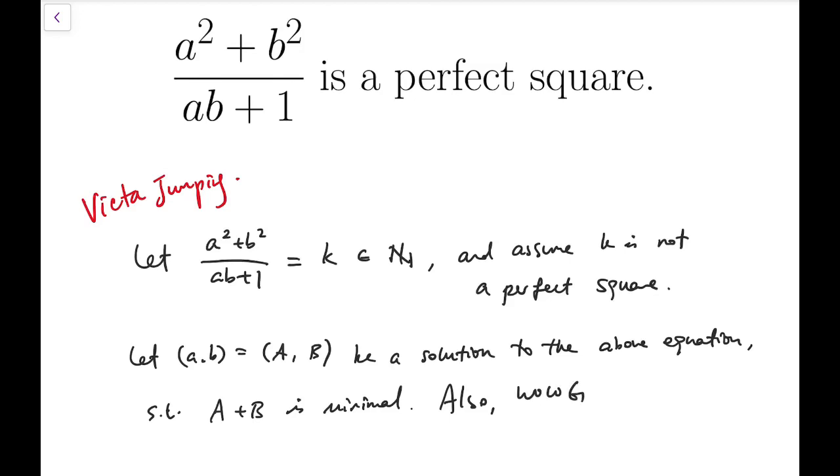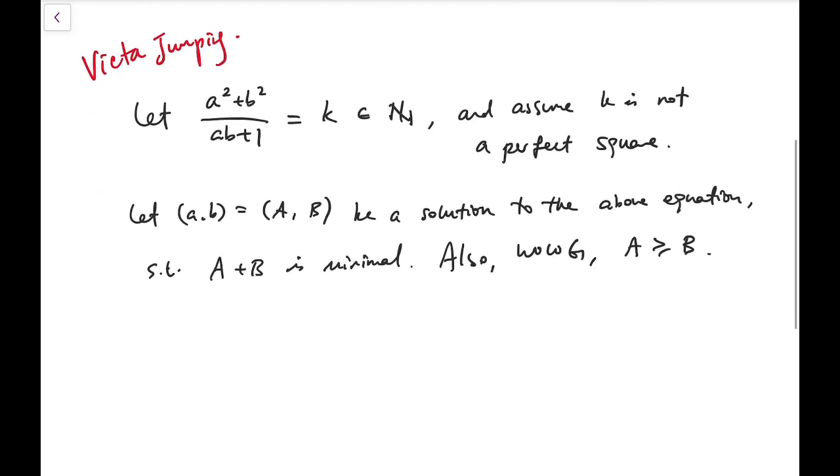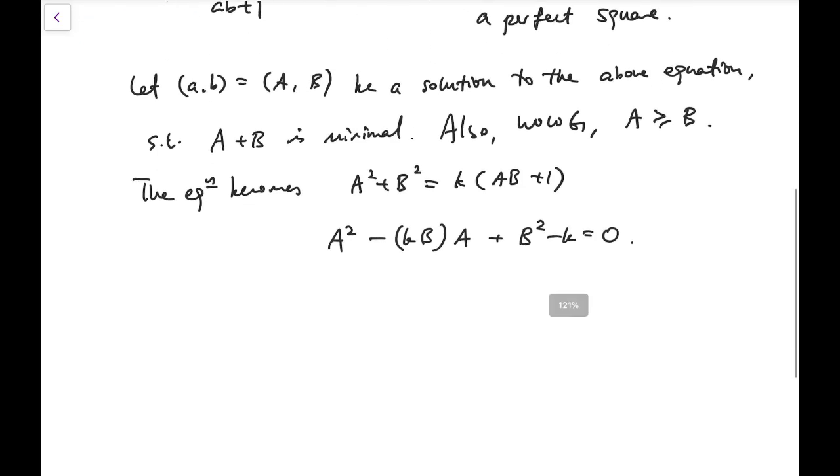Also, by symmetry of the above equation, I can say, without loss of generality, A is greater than or equal to B. So that equation becomes A squared plus B squared equals k times (AB plus 1). And so A squared minus kB times A plus B squared minus k equals 0.